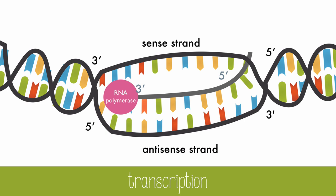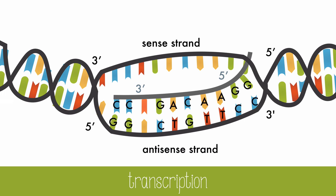RNA polymerase binds to the promoter, unzips DNA by breaking the hydrogen bonds, and covalently joins the RNA nucleotides together. Base pairing between DNA and RNA is still between C and G, A and T, but on the mRNA strand, uracil replaces thymine.